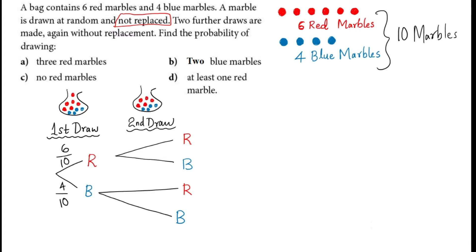If the first draw was red, your bag will now have five red marbles, because the first marble taken is not replaced. You originally had six, now you have five. So the probability of getting the next red is five out of nine — the total of marbles in the bag is now nine. This is the meaning of not being replaced. The probability of getting a blue is four over nine, because you haven't taken any blue marbles yet, so all four blue remain.